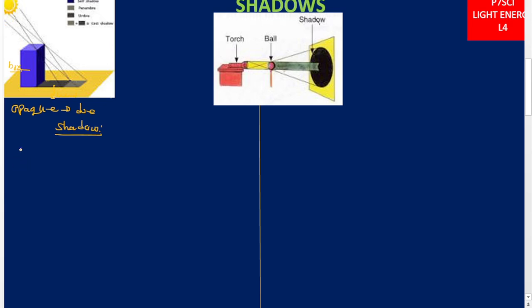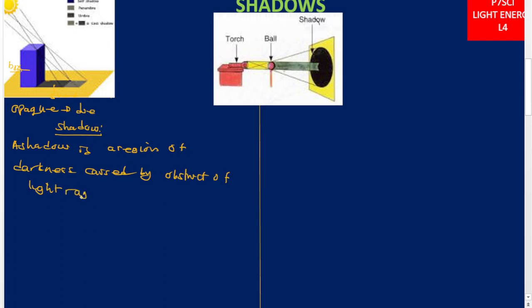We define a shadow as a region of darkness caused by the obstruction of light rays by an opaque object. Regardless of the light source, so long as it falls on an opaque object, a shadow is formed. The examination question may ask: how is a shadow formed? A shadow is formed as a result of the obstruction of light rays by an opaque object.